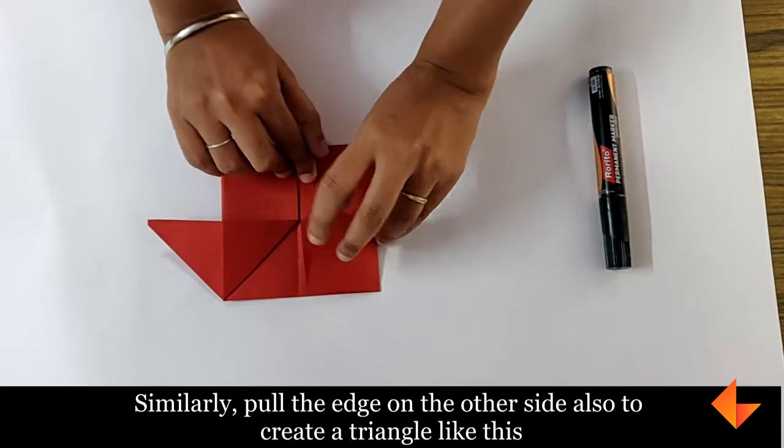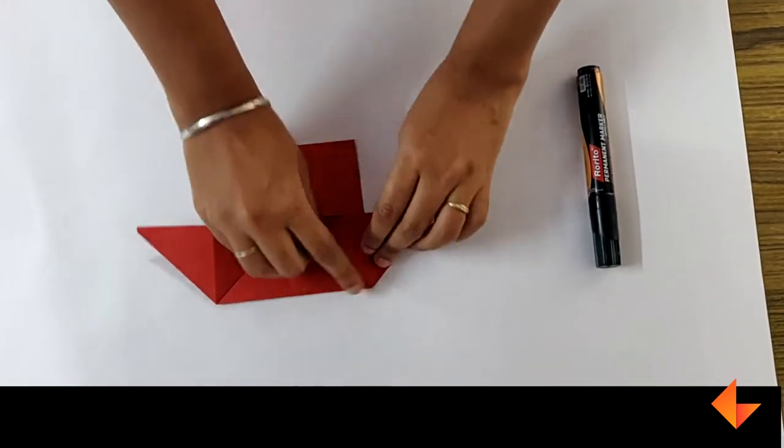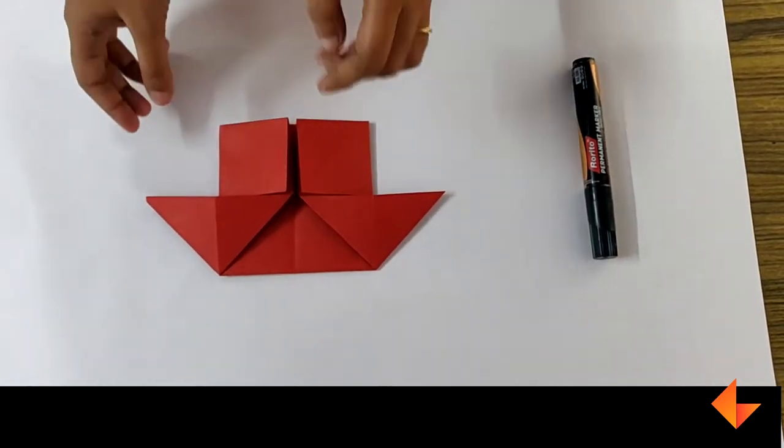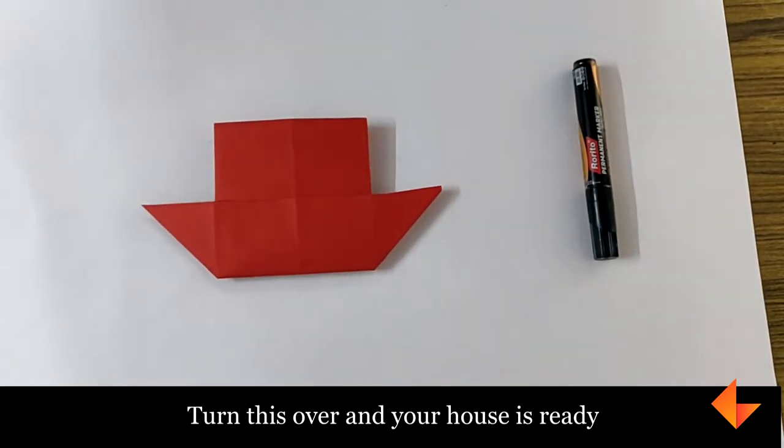Similarly, pull the edge on the other side also to create a triangle like this. Turn this over and your house is ready.